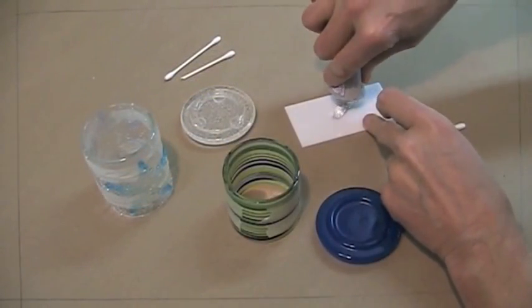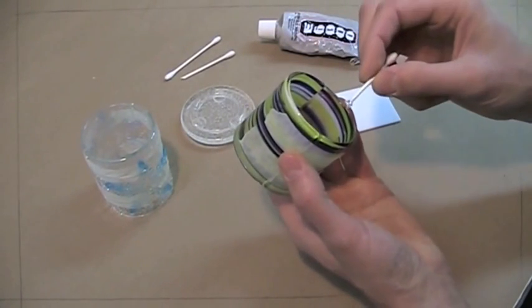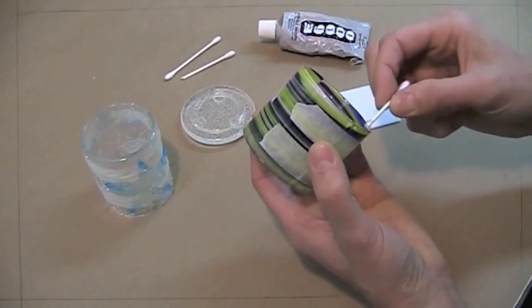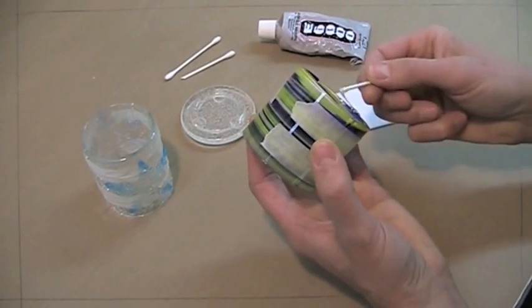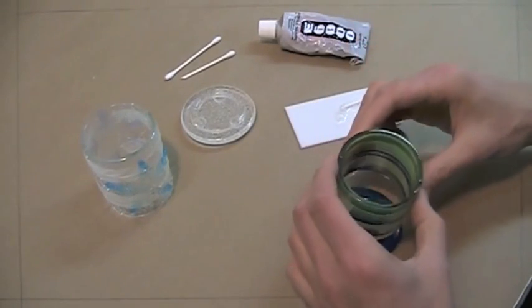Squeeze a glob of adhesive onto a piece of scrap glass. Use a small tool to apply adhesive to the inside bottom edge of the panels. In our studio, we use q-tips that have had the cotton ball cut off one end.